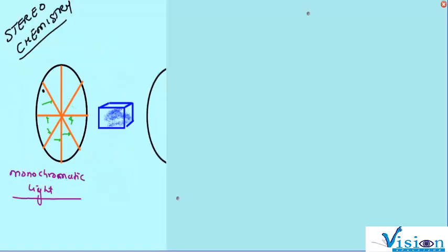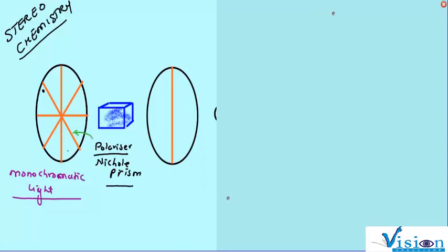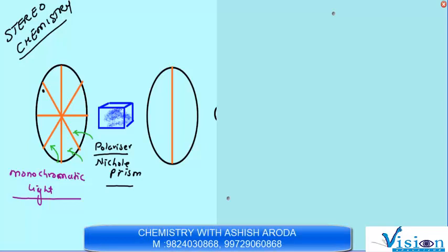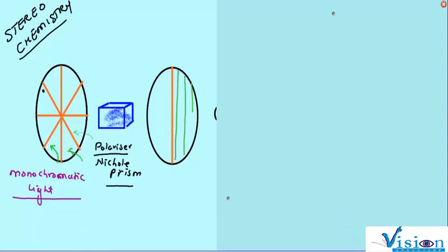If we have such light and we pass it through a polarizer, which is normally a Nicol prism, and when we pass through the Nicol prism, it propagates in multiple planes but they are parallel to each other. When only a particular plane propagates, we call it polarized light.